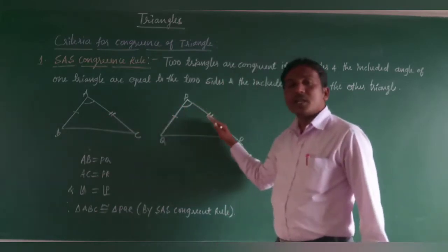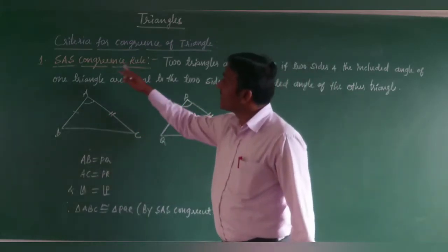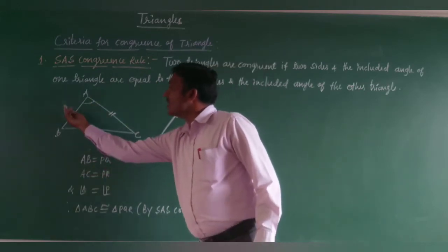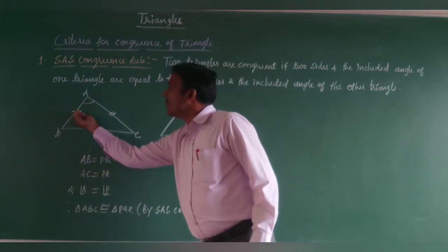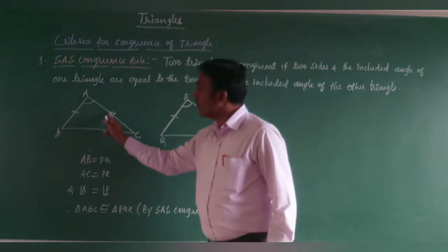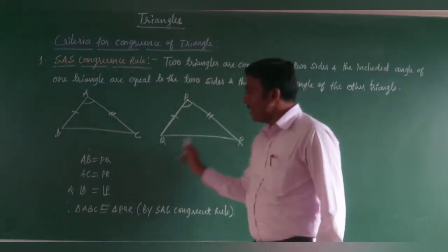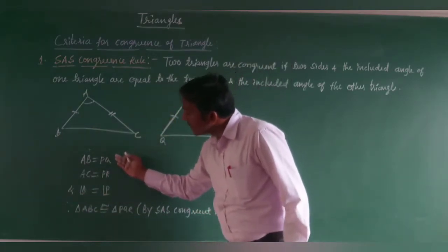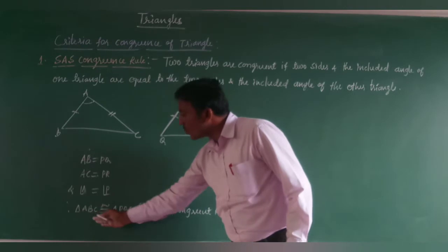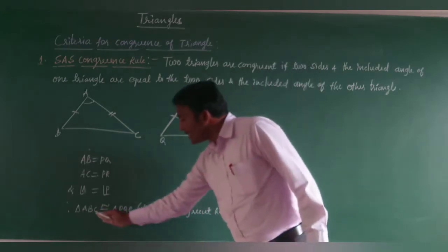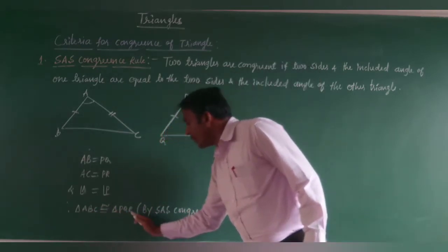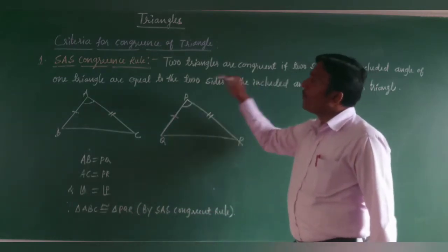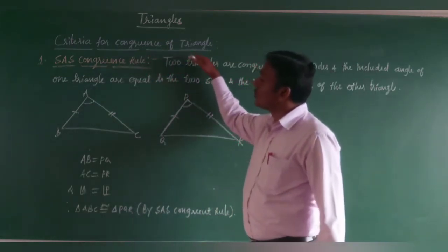If AB = PQ, AC = PR, and angle A = angle P, then by the Side-Angle-Side congruence rule, we can say these two triangles are congruent to each other by SAS. This is the first criterion for congruence of triangles.